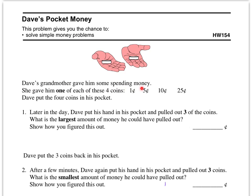Dave's grandmother gave him some spending money — one of each of the four coins: a penny (1 cent), a nickel (5 cents), a dime (10 cents), and a quarter (25 cents). Dave put the four coins in his pocket, then later pulled out three of them. Part one asks: what is the largest amount of money he could have pulled out? The clue is to think about which three coins are the most valuable.